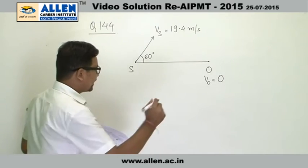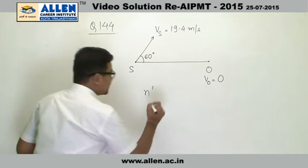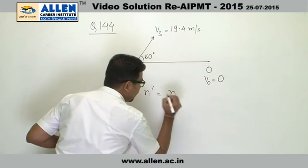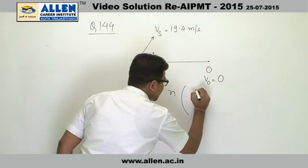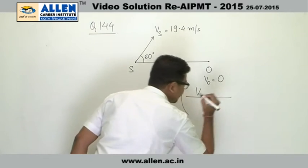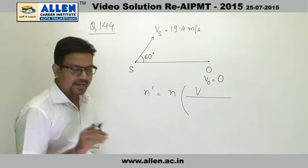As we know that the apparent frequency is given by n' equals actual frequency n, then the speed of the sound that is v, as the speed of the observer is given to be 0 because the observer is at rest.